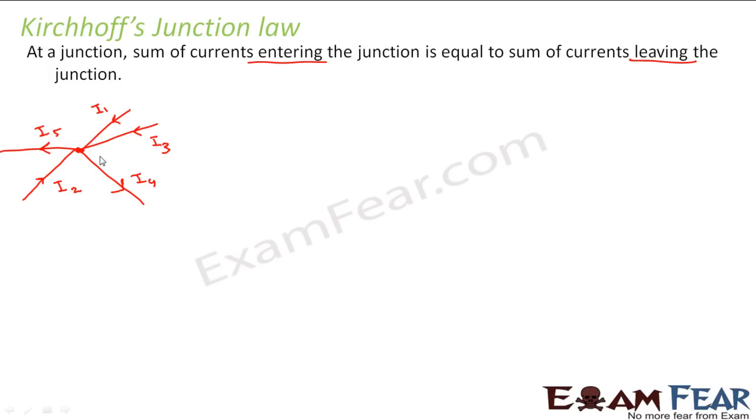According to Kirchhoff's junction law, the sum of the currents entering the junction, that is I1 plus I2 plus I3, should be equal to the sum of the currents leaving the junction, that is I4 plus I5.